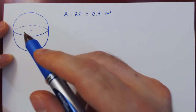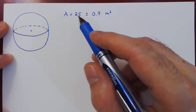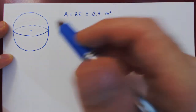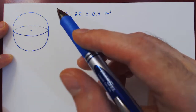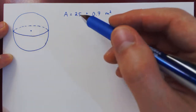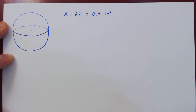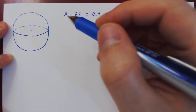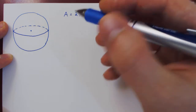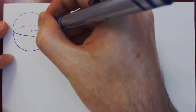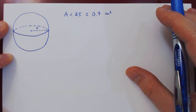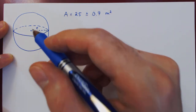Let's assume we have a sphere for which we have found that the surface area is equal to 25 ± 0.7 meters squared, and from this we want to calculate the volume of the sphere with uncertainty. We would have to express the volume as a function of the surface area, but that is not a very natural connection. Instead, we can pass through the radius first.